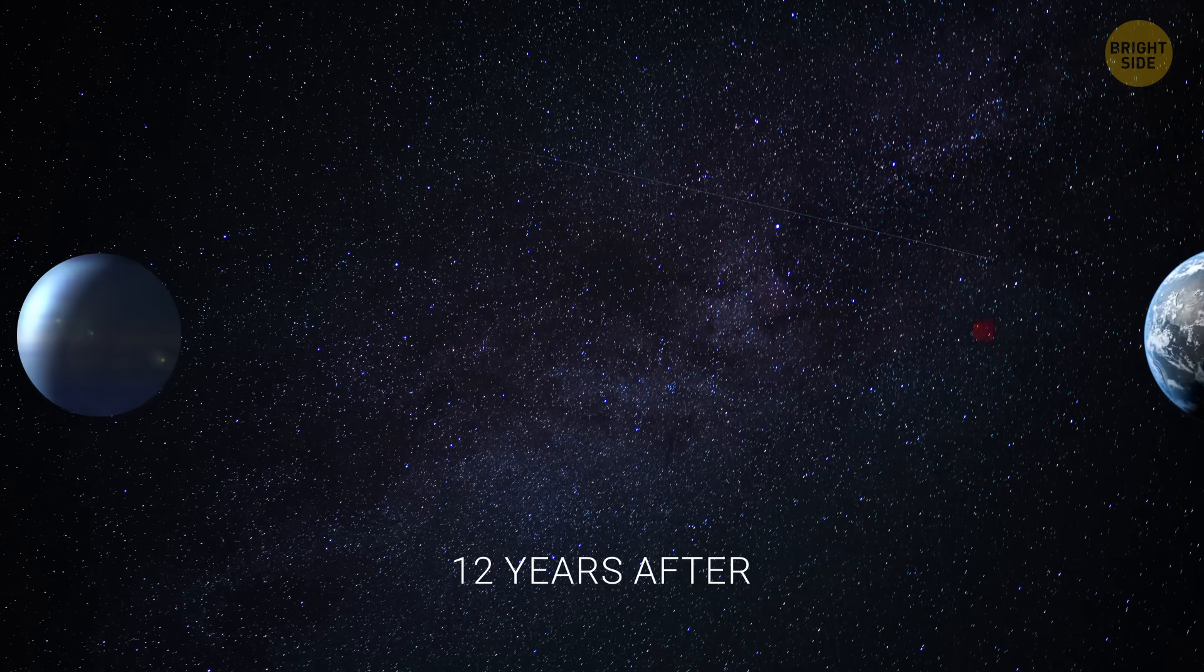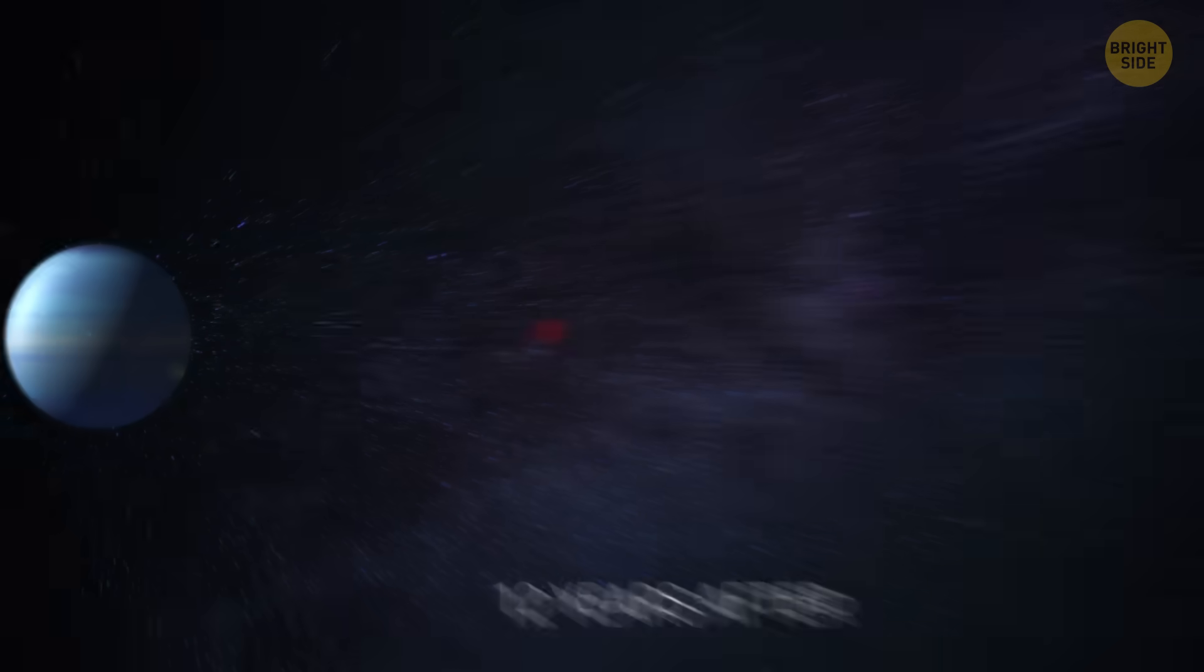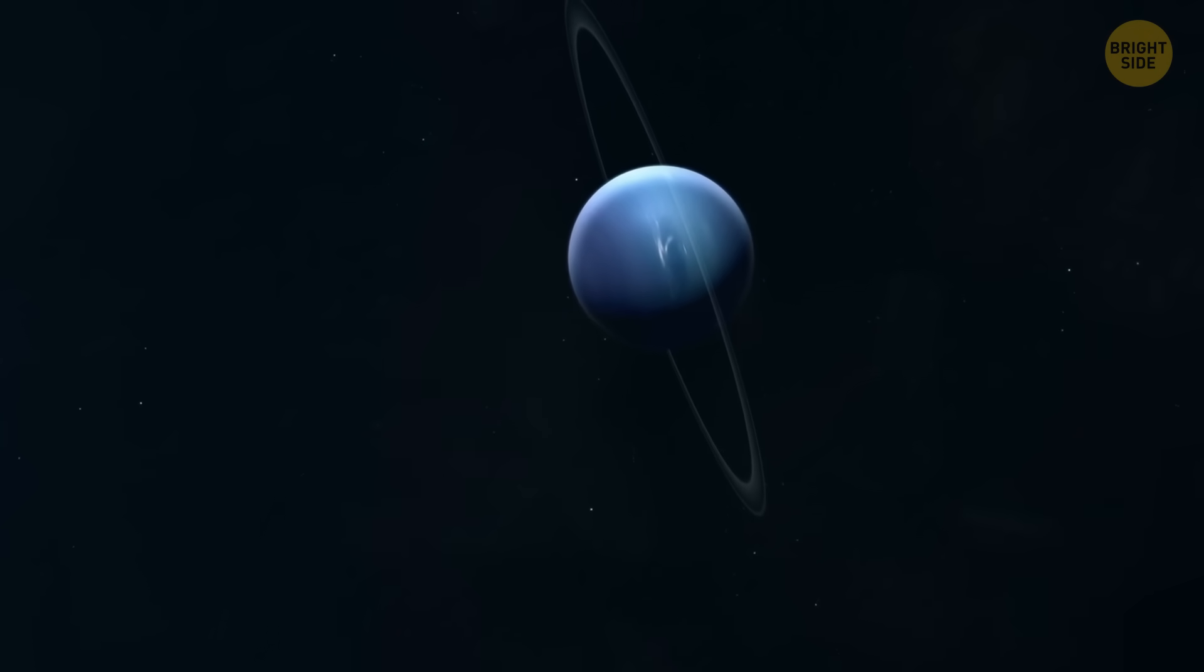Voyager 2's final planetary stop was Neptune. It happened 12 years after leaving Earth. There, it discovered 6 small moons and rings around the planet. It studied Neptune's atmosphere and magnetic field and observed volcanic vents on Triton, Neptune's largest moon.